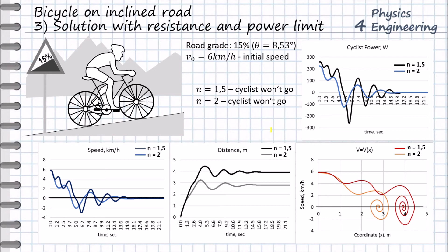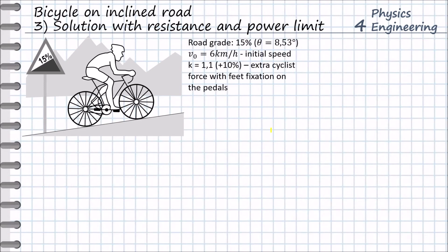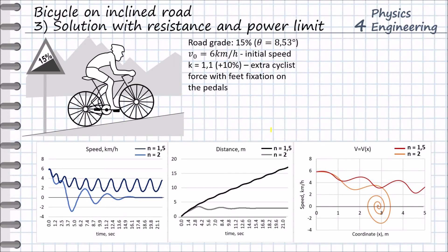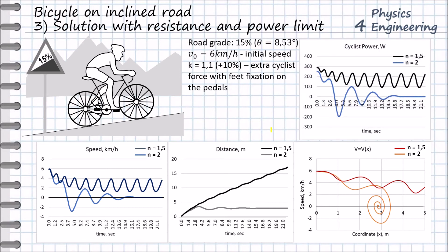It should be mentioned that all these solutions assume the cyclist can push on the pedal only by his own weight. Otherwise the solution will be different. This is what we consider in solution number 4: with consideration of an additional 10% of extra force, which can be obtained by additional feet fixation on the pedals. We then see that the cyclist can ride over the hill on the first gear. So an additional 10% force is enough to ride over the 15% hill.